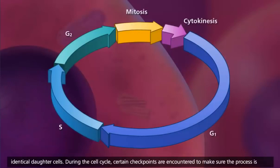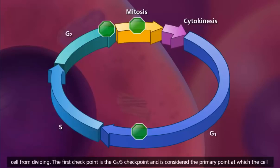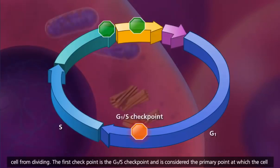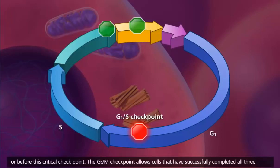During the cell cycle, certain checkpoints are encountered to make sure the process is occurring accurately. And if it is not, the cell cycle will stop at the checkpoint and correct, or possibly inhibit that cell from dividing. The first checkpoint is the G1/S checkpoint and is considered the primary point at which the cell cycle continues or stops. External signals and growth factors can influence the cell cycle and affect the progress at or before this critical checkpoint.